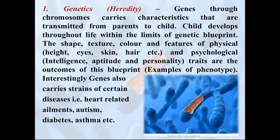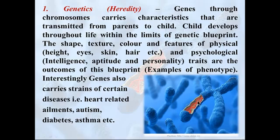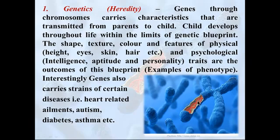The outcomes which can be observed or seen are called phenotypes. Genes carry a shape which contains DNA — deoxyribonucleic acid — these are strands of DNA within the genes. Interestingly, genes also carry strands of certain diseases. Diseases can be transmitted from parents to child through genes — cardiovascular disease, autism, diabetes, asthma, and other diseases can be transmitted from parents to the child. The most famous epidemic of today's world is AIDS, which is also transmitted from parents to the child.